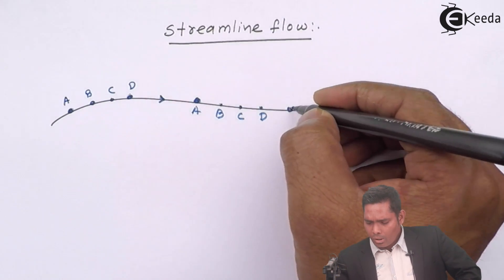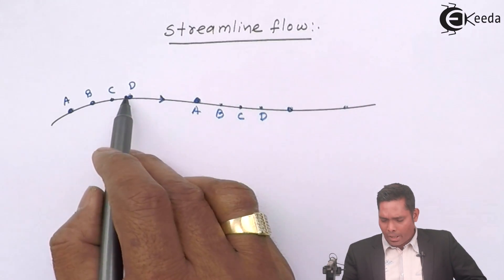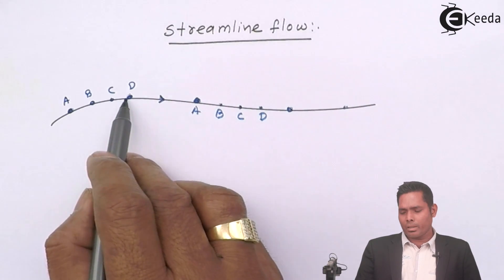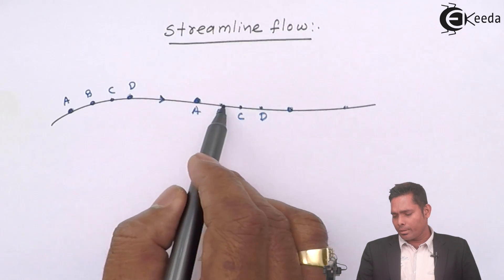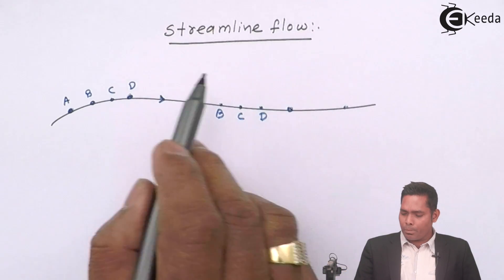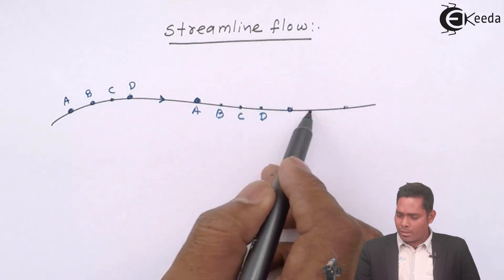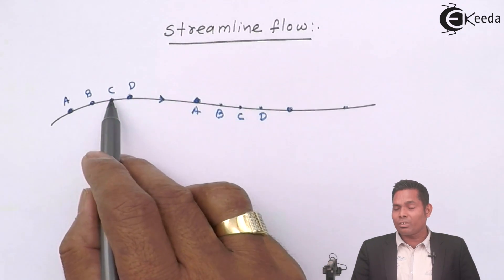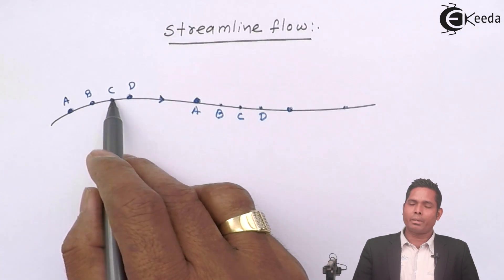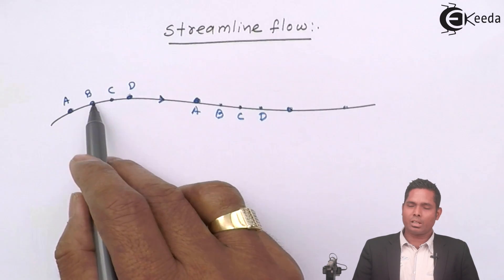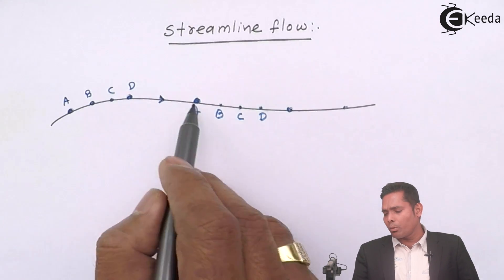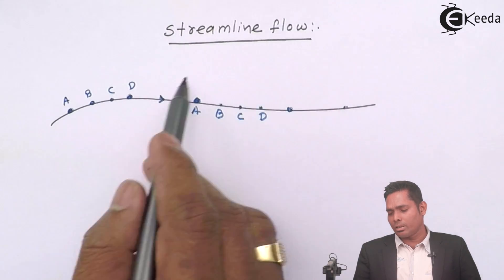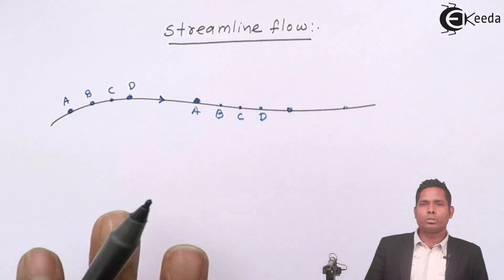If I think of particle D and let it move along a path, C also has to follow the same path. If the path followed by D is the same as the path followed by C, B, and A, then the flow is streamlined. If D follows this path and C goes in another direction, then that flow is not streamlined.